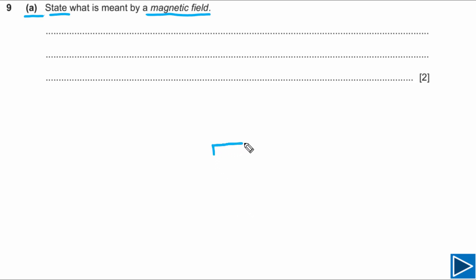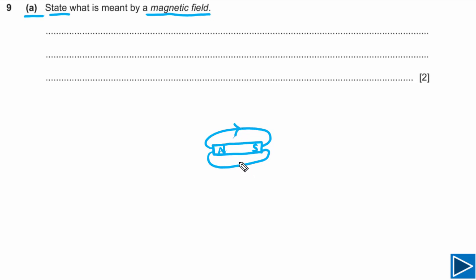Let's understand a little bit about magnetic field. Let's say this is our bar magnet and we can draw the magnetic field around it. You can add arrows to show direction of magnetic field lines. Magnetic field lines do not only stop at the poles — they continue inside the magnet as well. This is a difference between magnetic field and electric field.